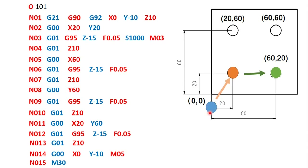To summarize the drilling program: the tool starts 10mm above the workpiece, rapidly moves to each hole position, drills to 15mm depth with linear interpolation, retracts 10mm above the surface, and repeats for all four positions before returning to the original position and stopping. This is how a simple drilling operation is programmed on a milling machine.